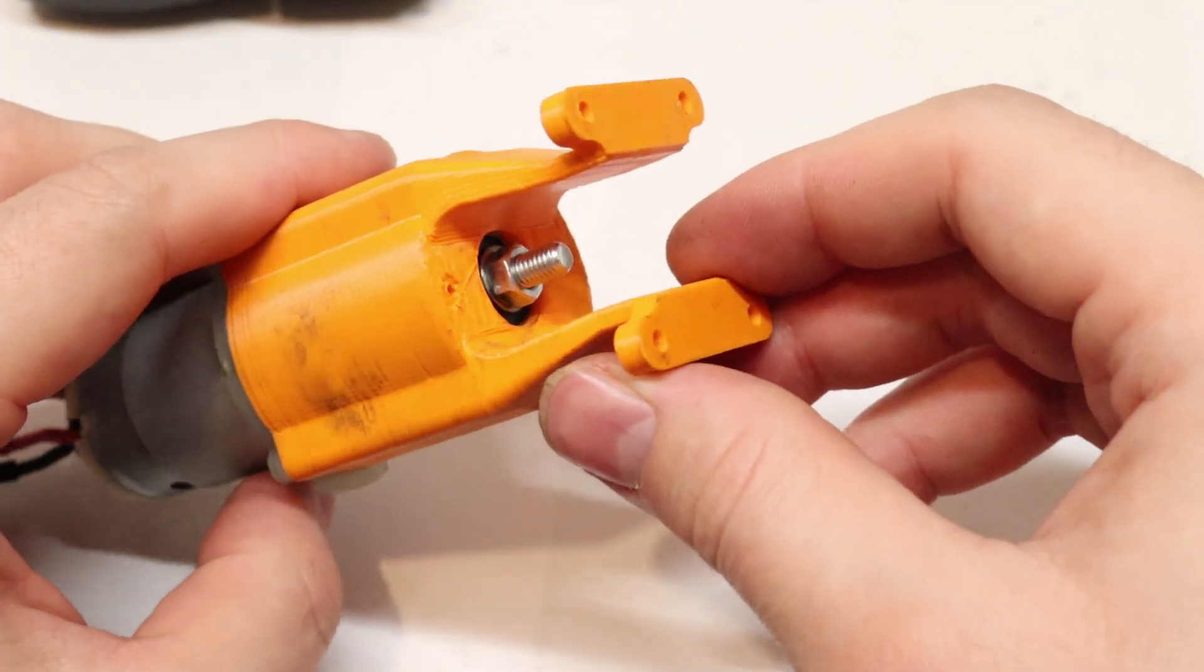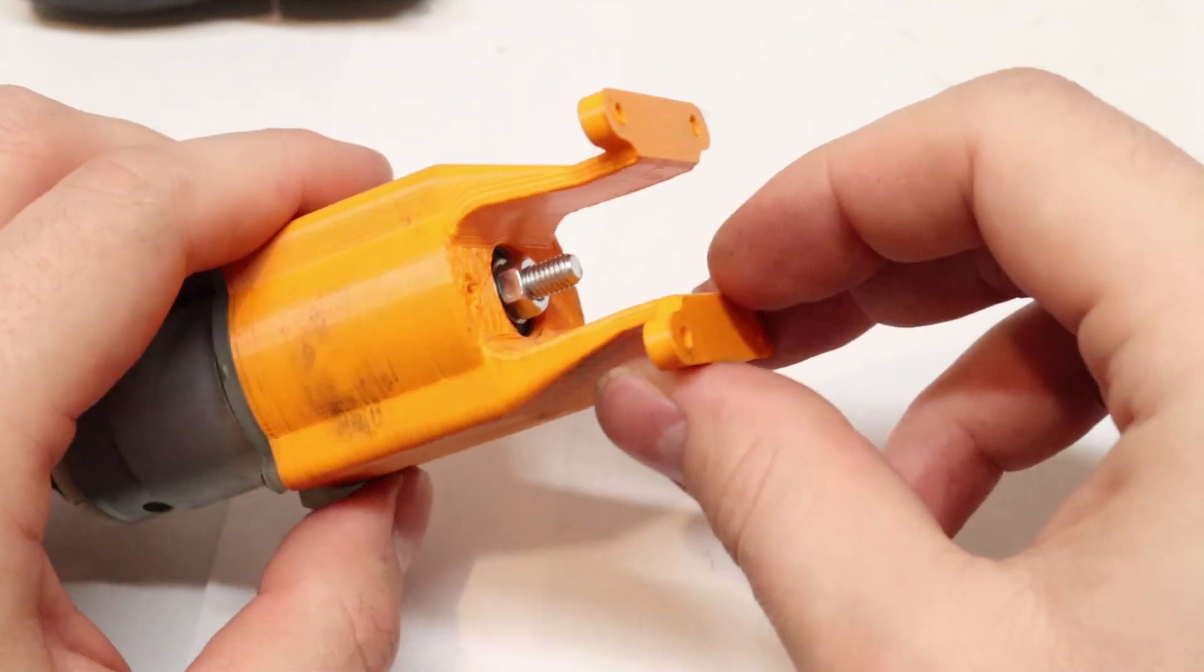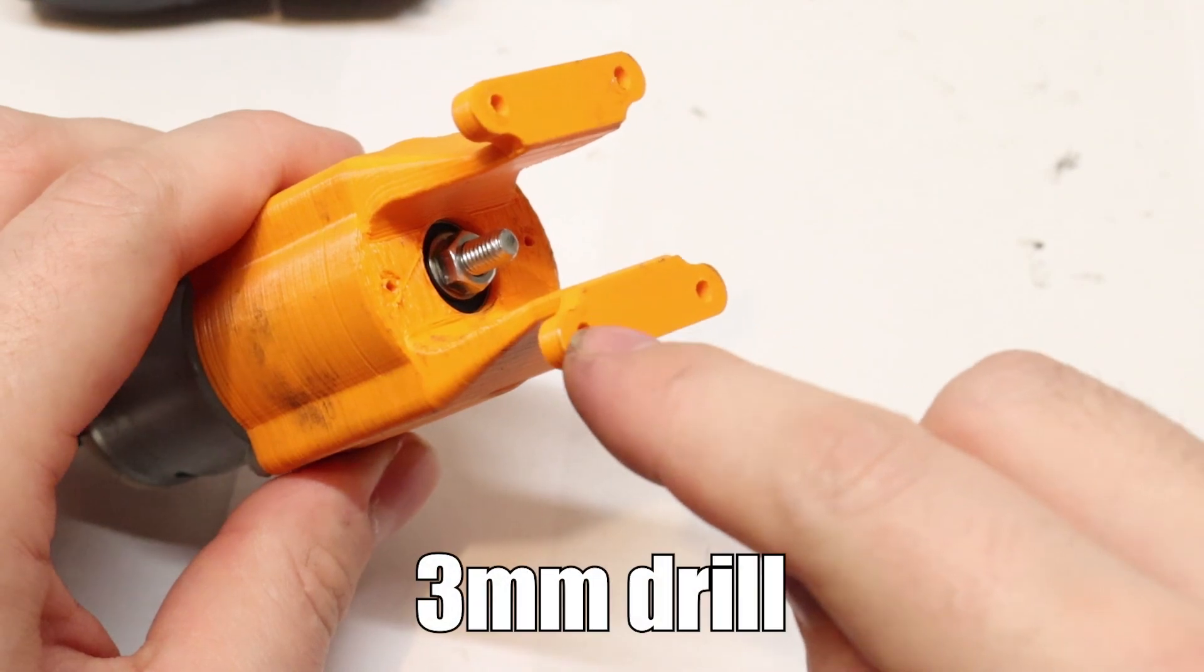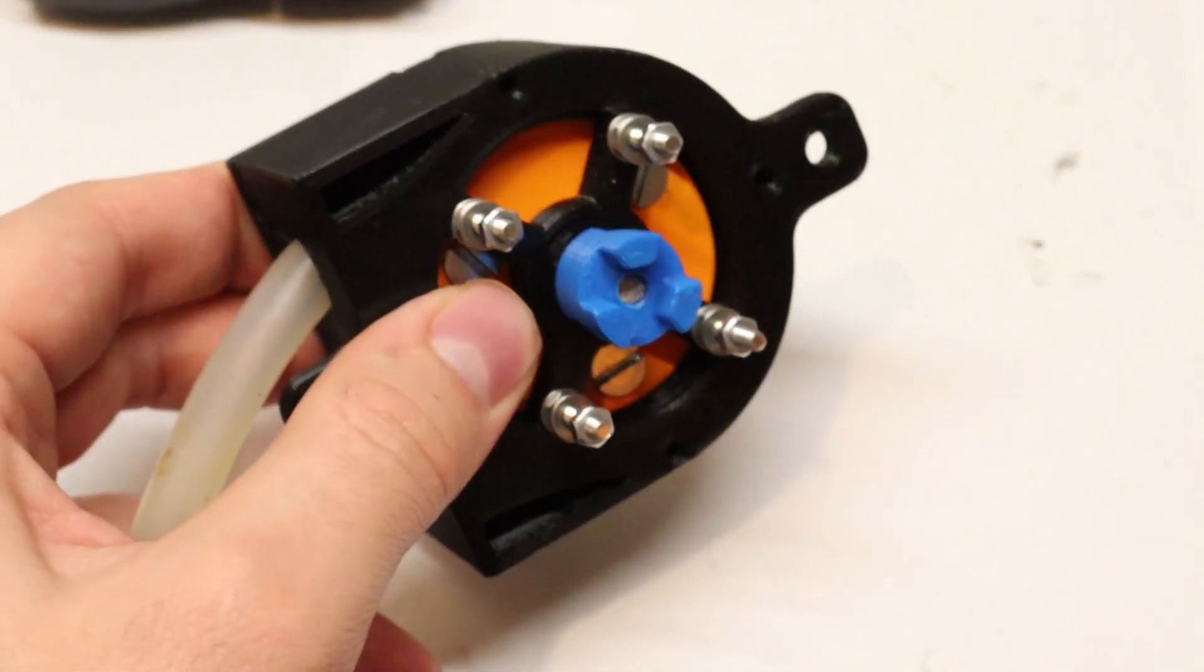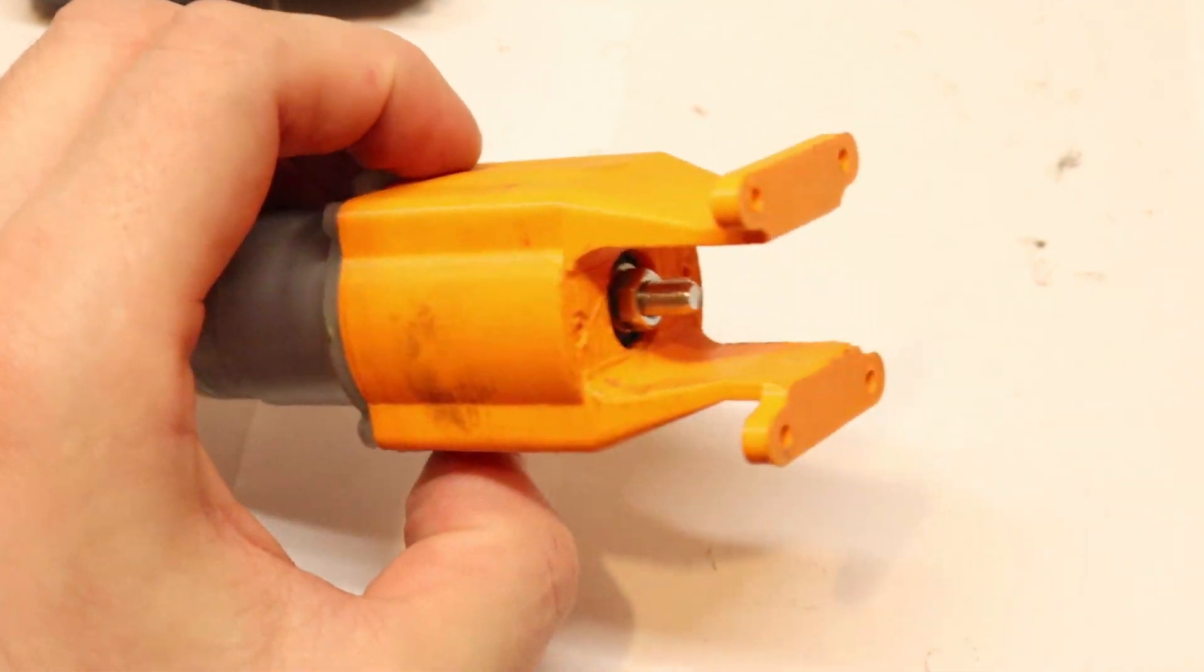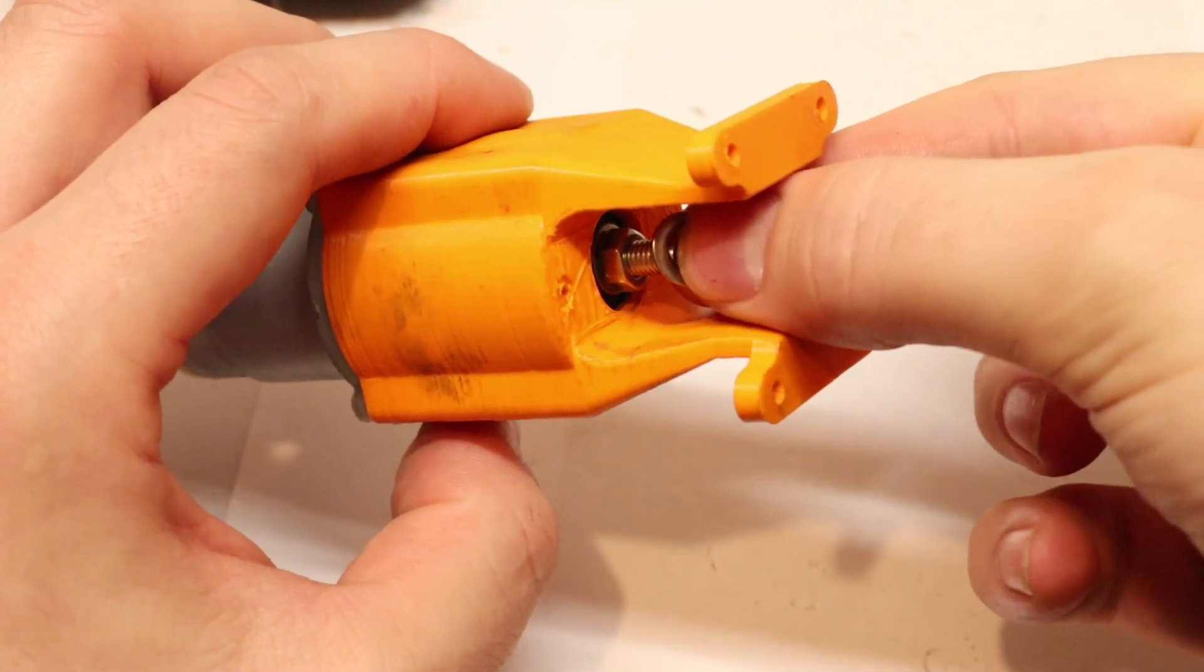This is basically what it looks like right now. These 4 holes need to be drilled out with a 3mm drill bit to fit on our pump assembly. This is now what the assembly looks like.